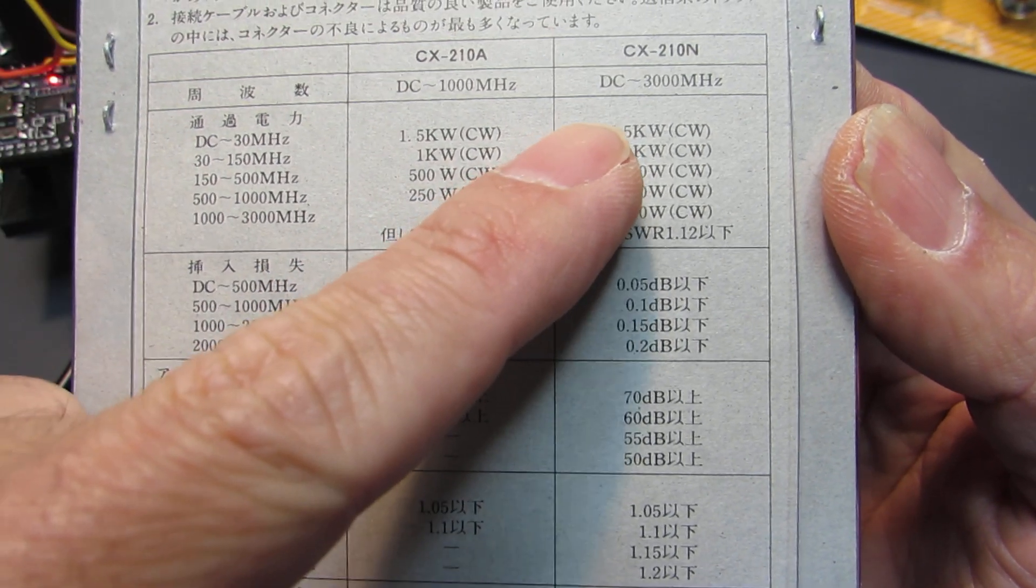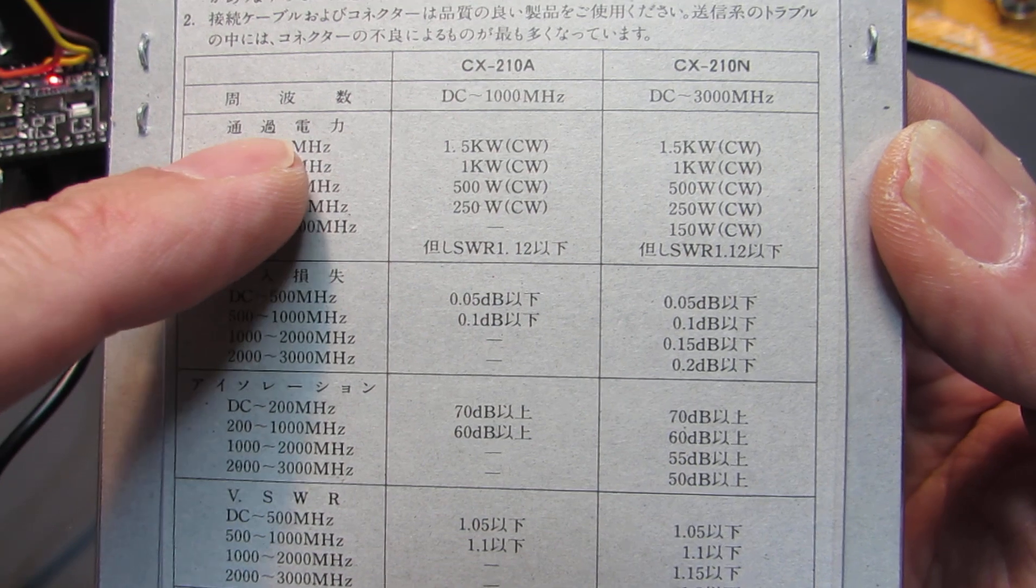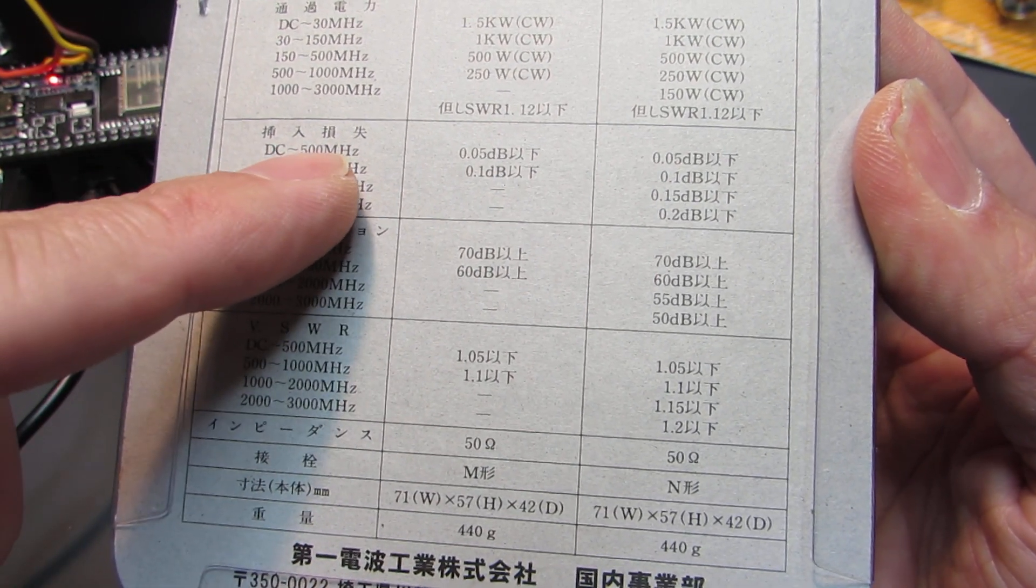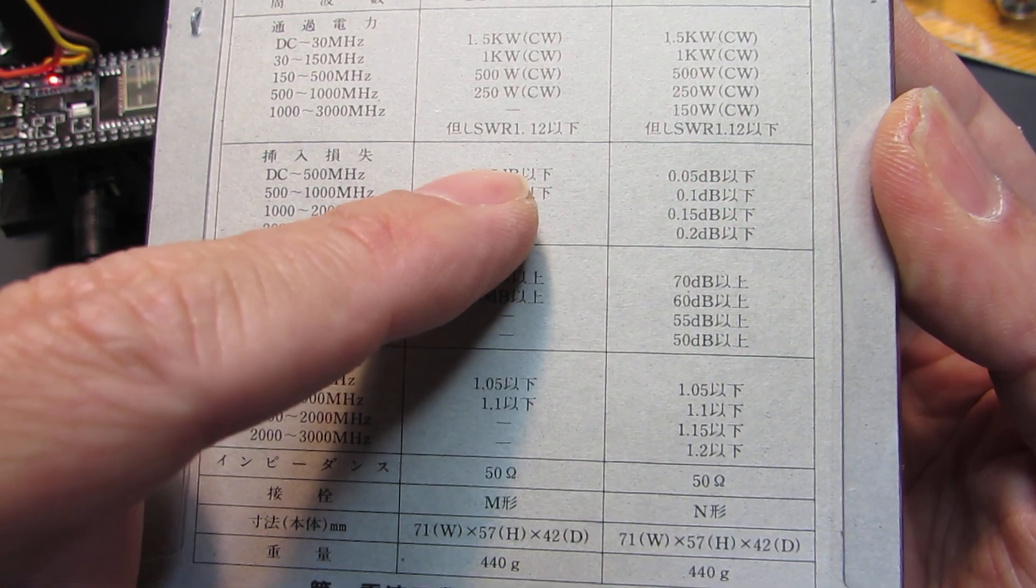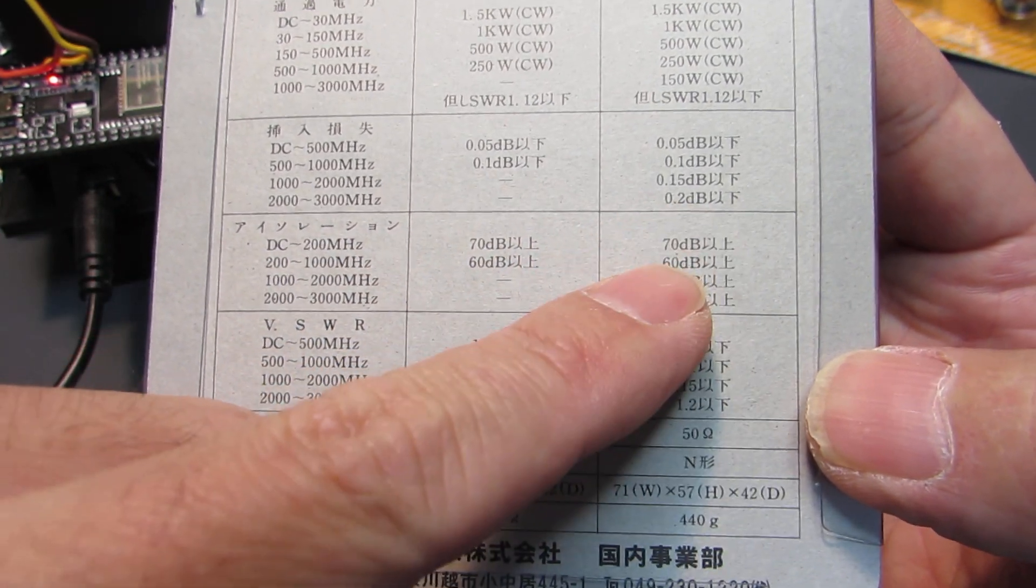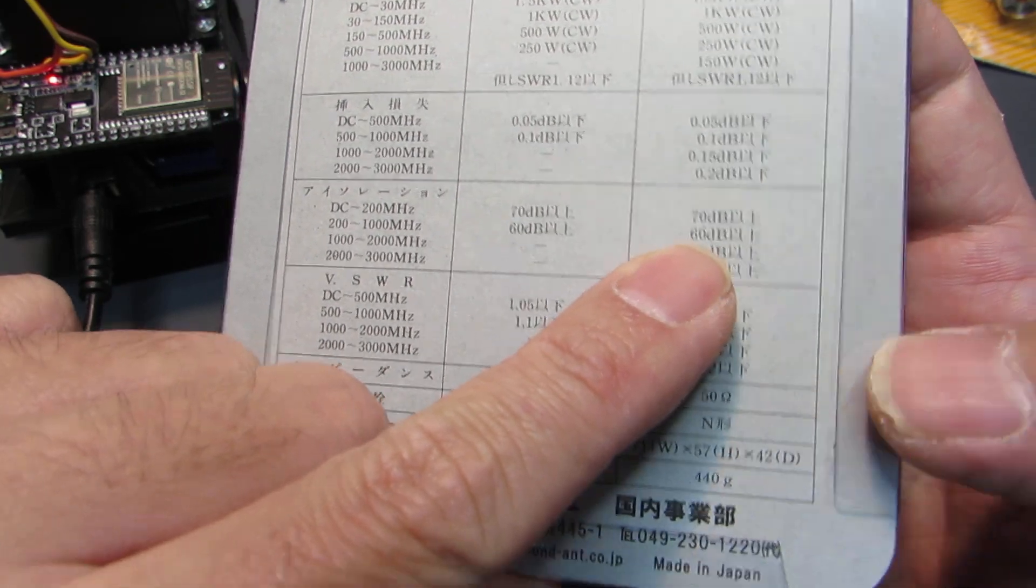Up to 1.5kW CW at up to 30MHz. The insertion loss from DC to 500MHz is 0.05dB, very low. The isolation is more than 70dB. It's ideal. We cannot make this with a 3D printer.